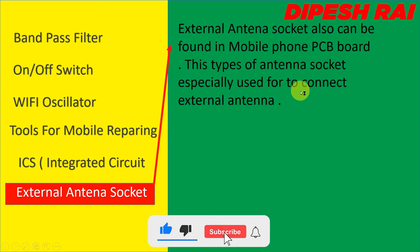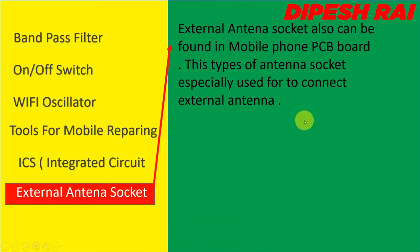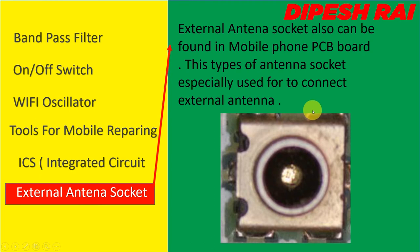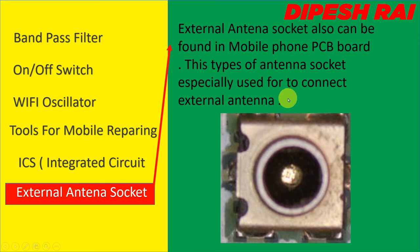External antenna socket can also be found in a mobile phone PCB board. These types of antenna sockets are specially used to connect an external antenna. Here is the image of the external antenna socket — it is also one of the small components available inside the mobile phone PCB board.